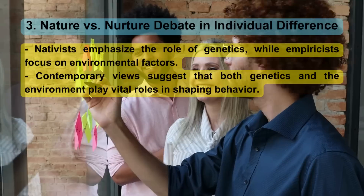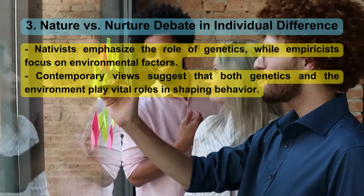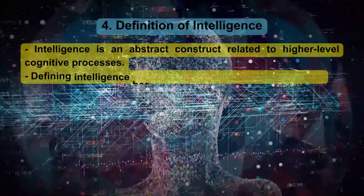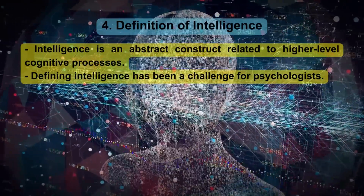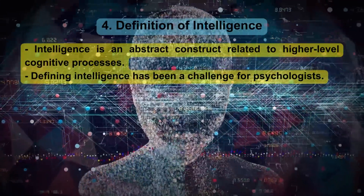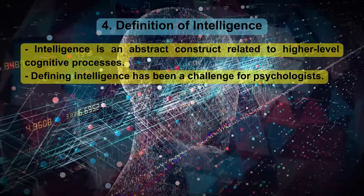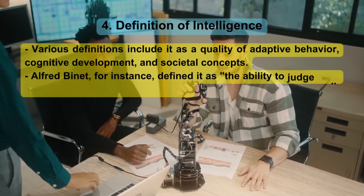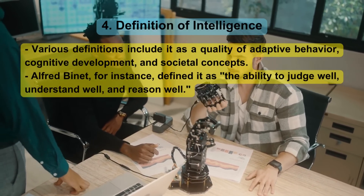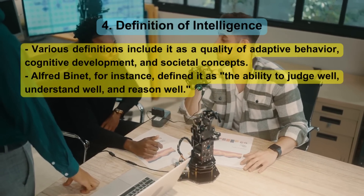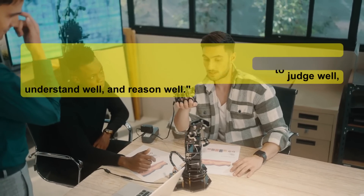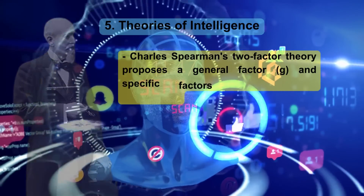Definition of Intelligence: Intelligence is an abstract construct related to higher-level cognitive processes. Defining intelligence has been a challenge for psychologists. Various definitions include it as a quality of adaptive behavior, cognitive development, and societal concepts. Alfred Binet, for instance, defined it as the ability to judge well, understand well, and reason well.